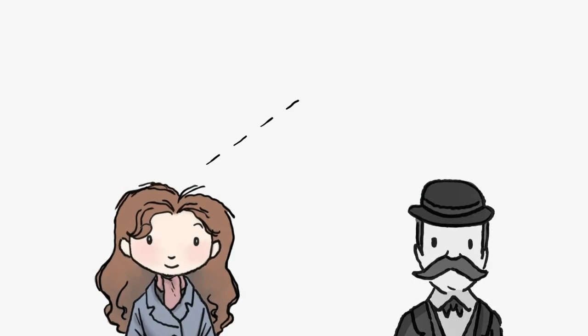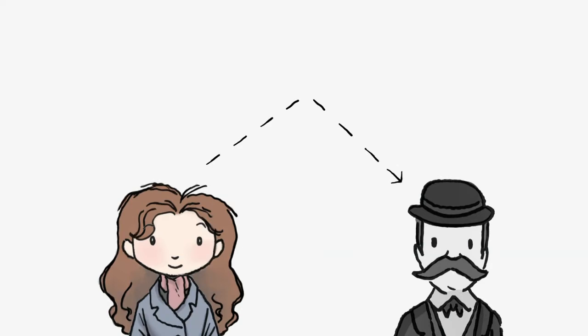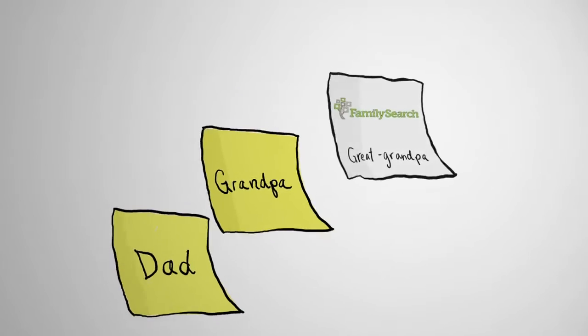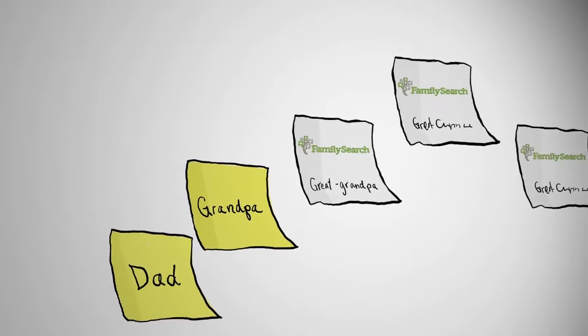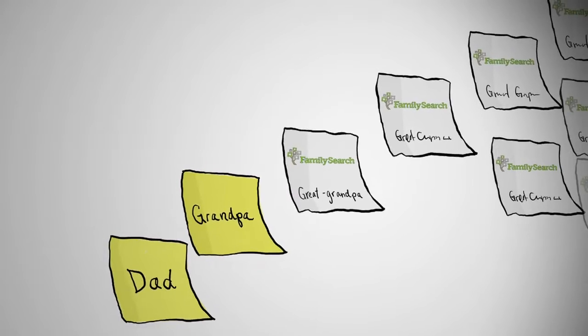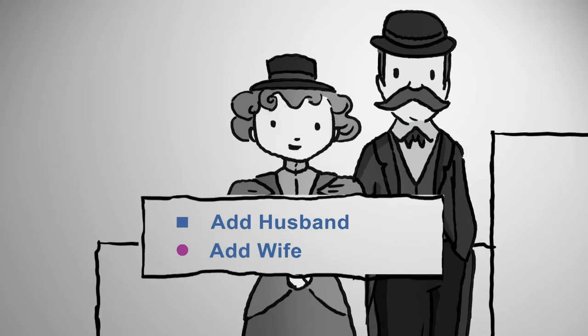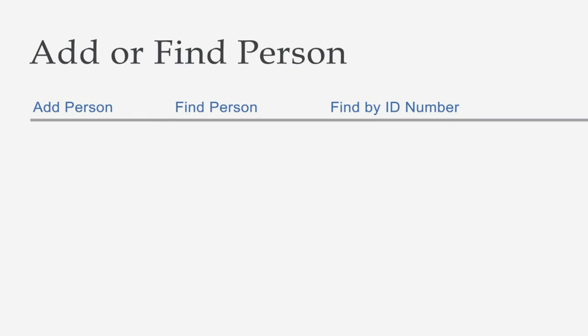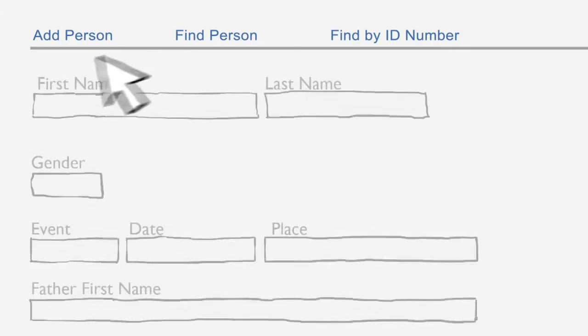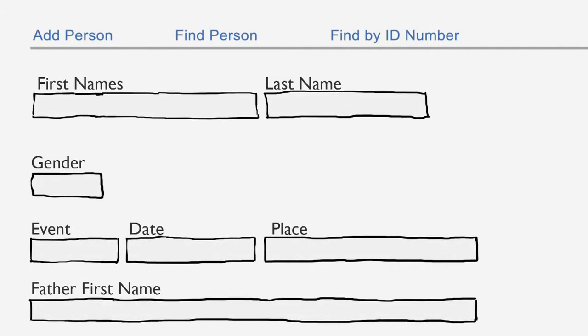Now she comes to her great-grandfather, who is deceased. This time, she isn't going to create a record — she's going to connect her family tree to records that are already available in FamilySearch. Again, she presses Add Husband, but this time, instead of going to the Add Person tab, she selects the Find Person tab, because she's going to connect to records that already exist in FamilySearch.